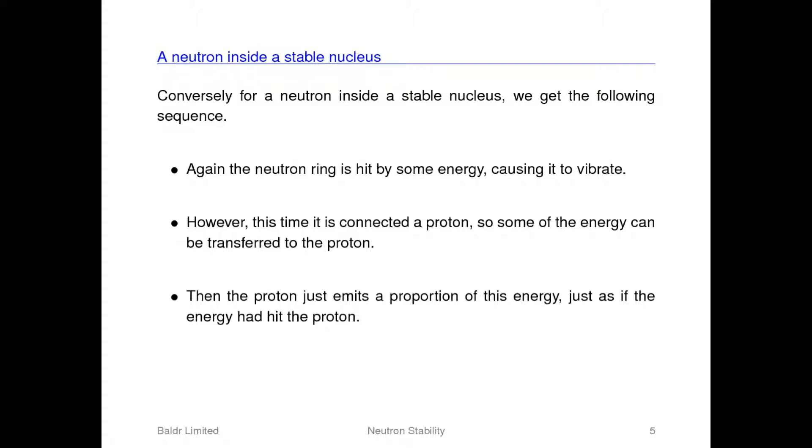However, if there are still too many neutrons, for example in hydrogen-3 which has one proton and two neutrons, then the protons cannot emit enough energy fast enough to stabilize the neutrons. Therefore after a period of time energy builds up and one of the neutrons beta decays.